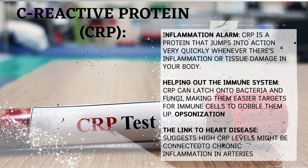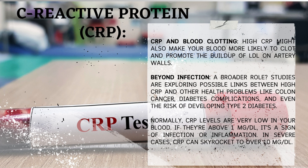Research suggests high CRP levels might be connected to chronic inflammation in arteries, which can lead to fatty buildup (atherosclerosis), increasing your risk of heart disease. High CRP might also make your blood more likely to clot and promote the buildup of LDL on artery walls. Studies are also exploring links between high CRP and other health problems like colon cancer, diabetes complications, and even the risk of developing type 2 diabetes. Normally, CRP levels are very low in your blood. If they're above 1 mg/dL, it's a sign of something going on. In severe cases, CRP can skyrocket to over 10 mg/dL.